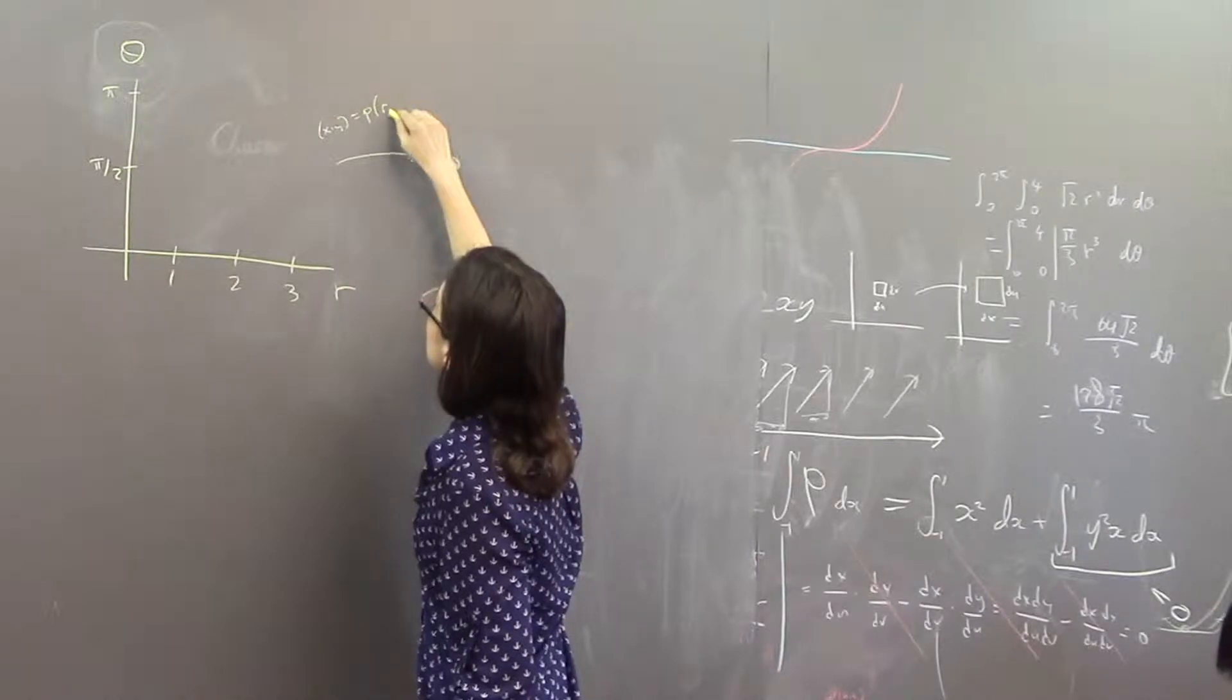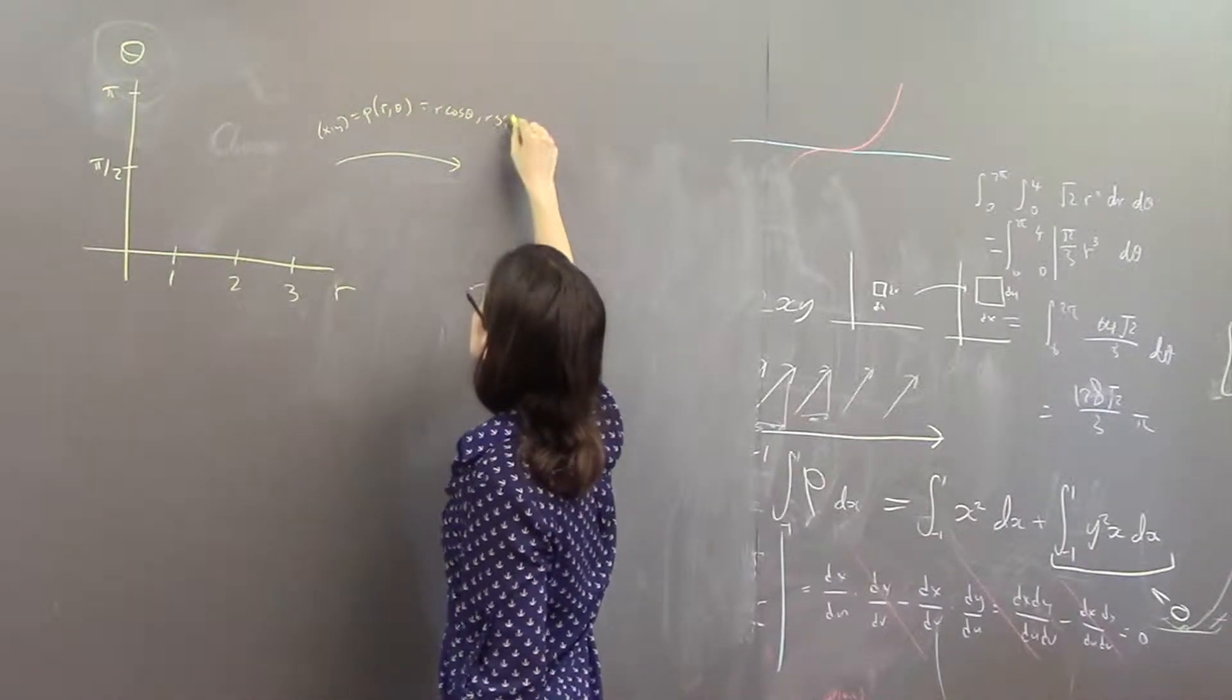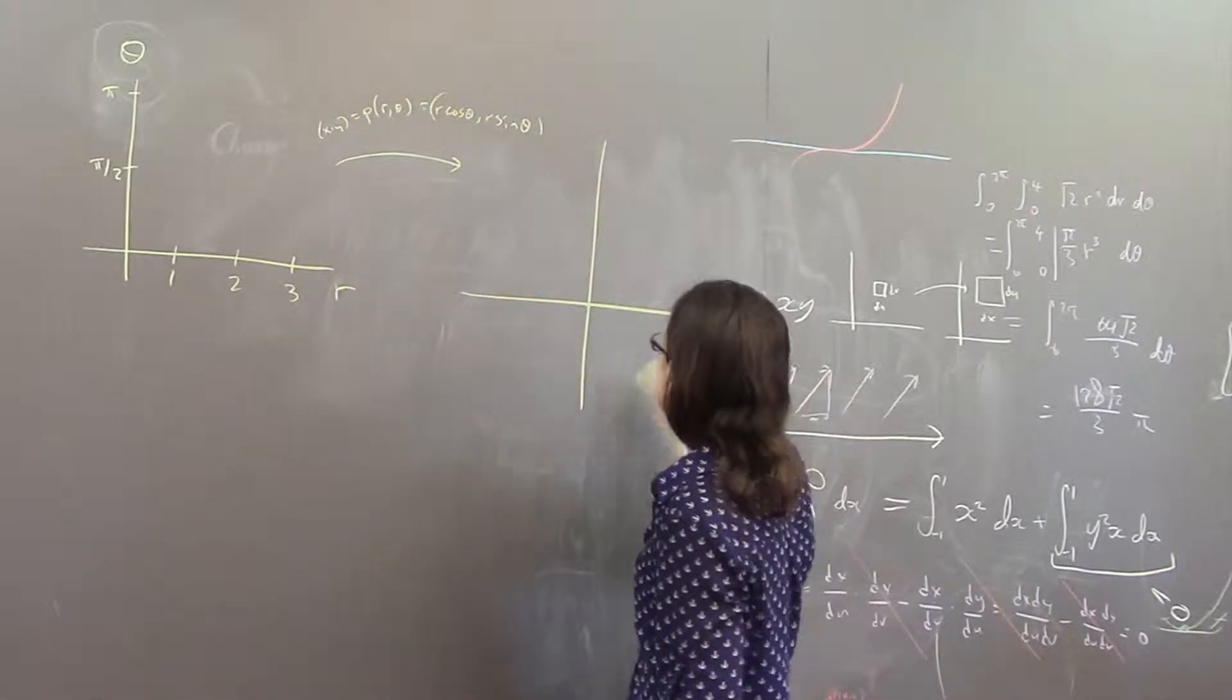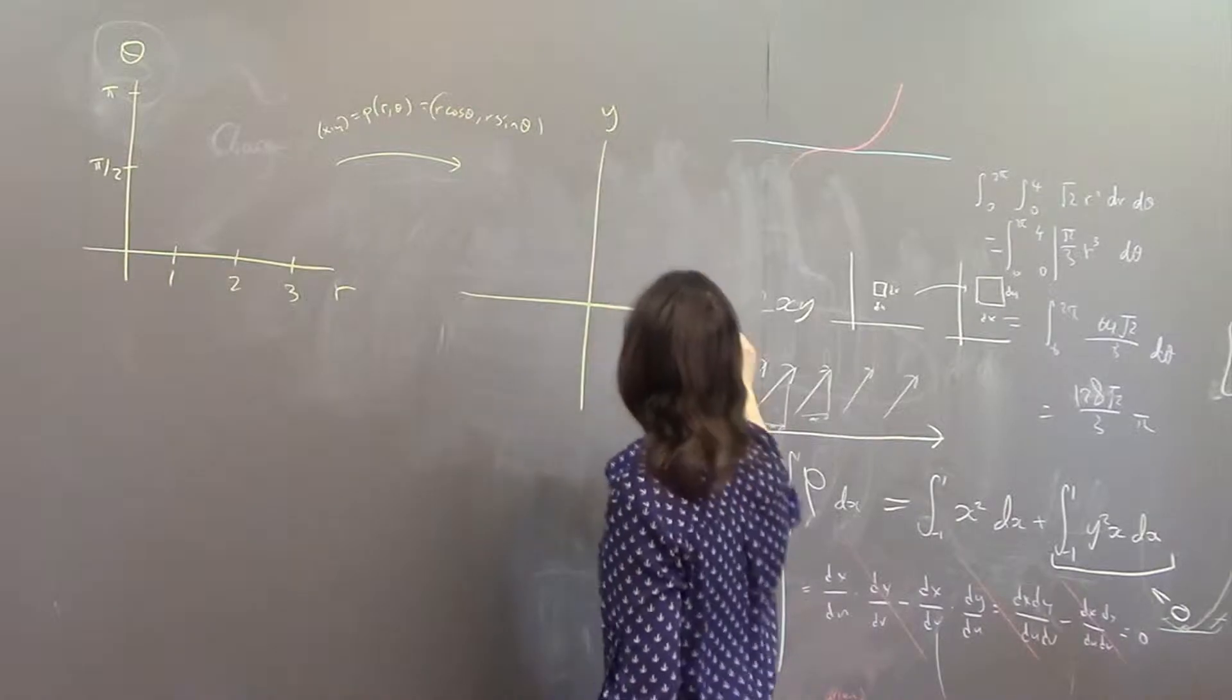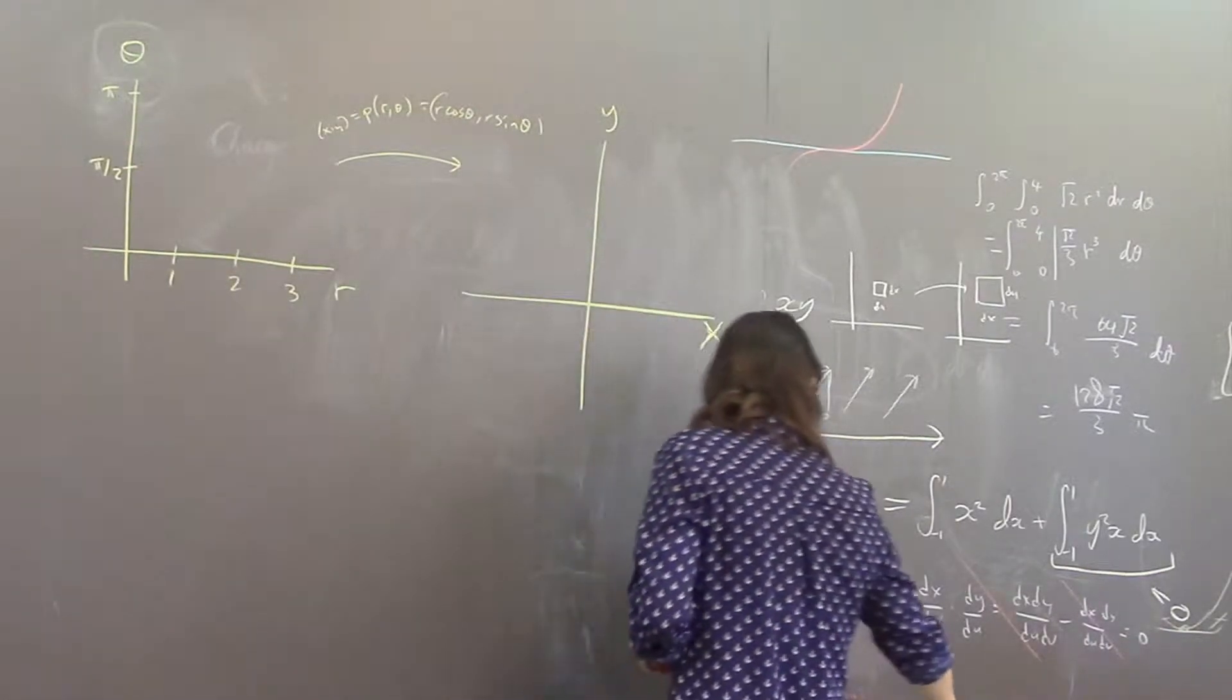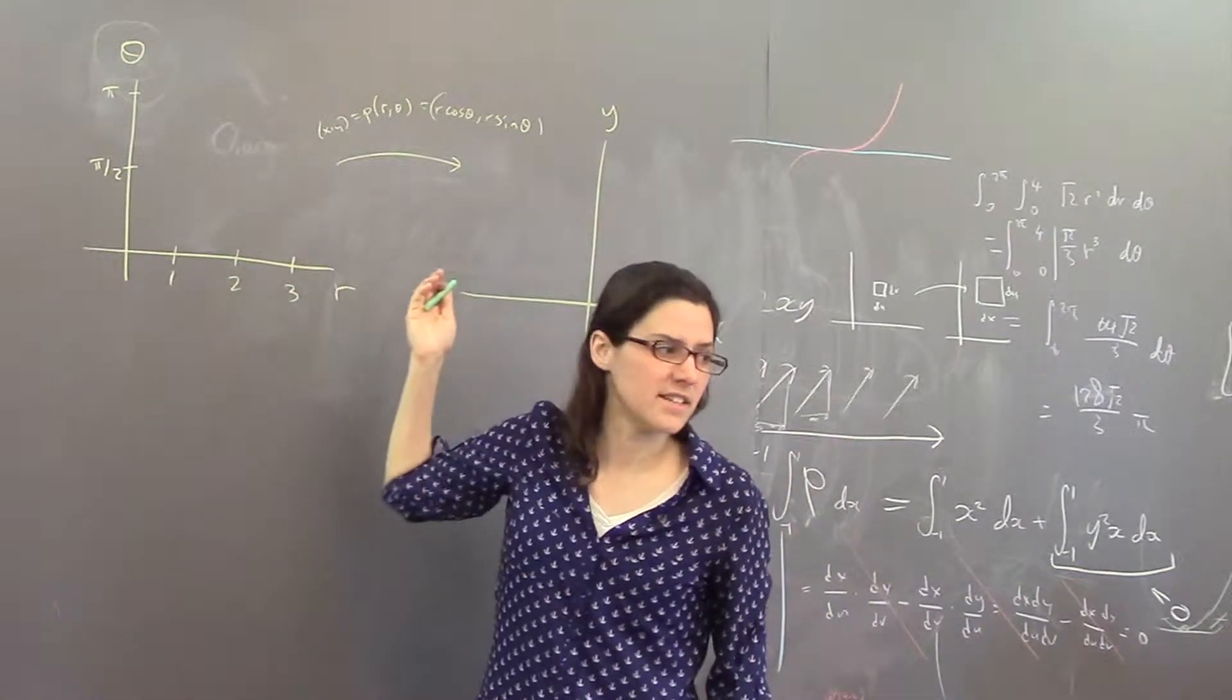the polar coordinate function of r and theta, and it's r cos theta, r sine theta. That takes us over to the xy plane. So if you start with some region of any kind over here, it maps to over there.